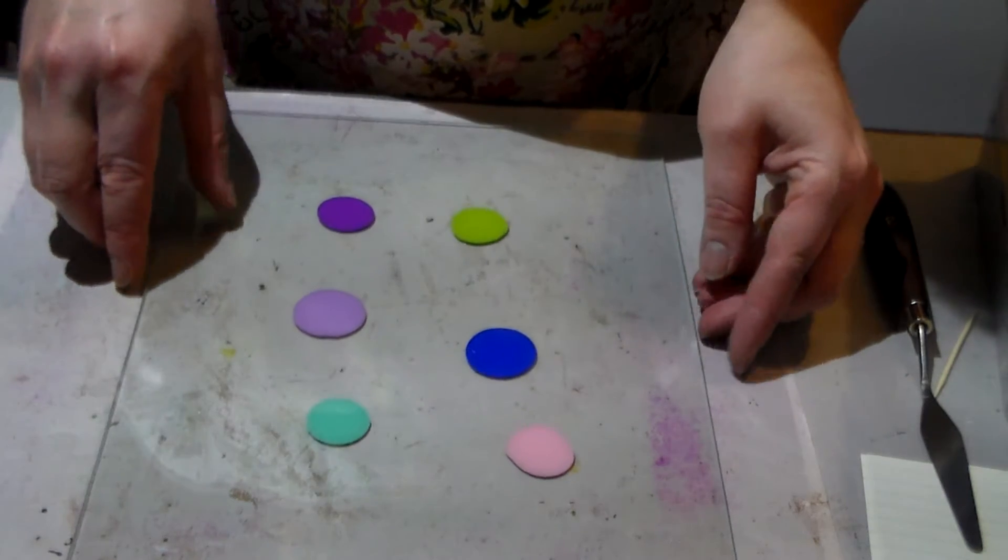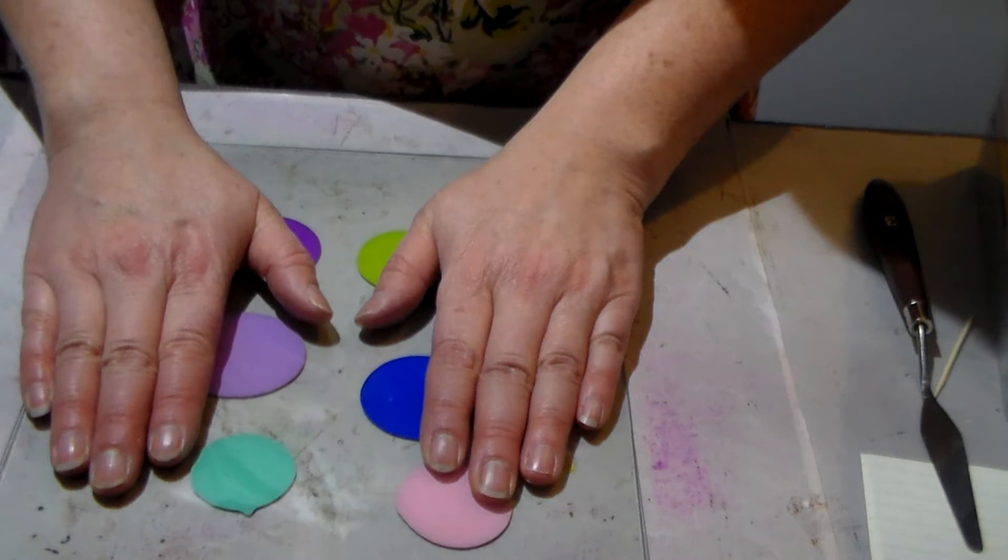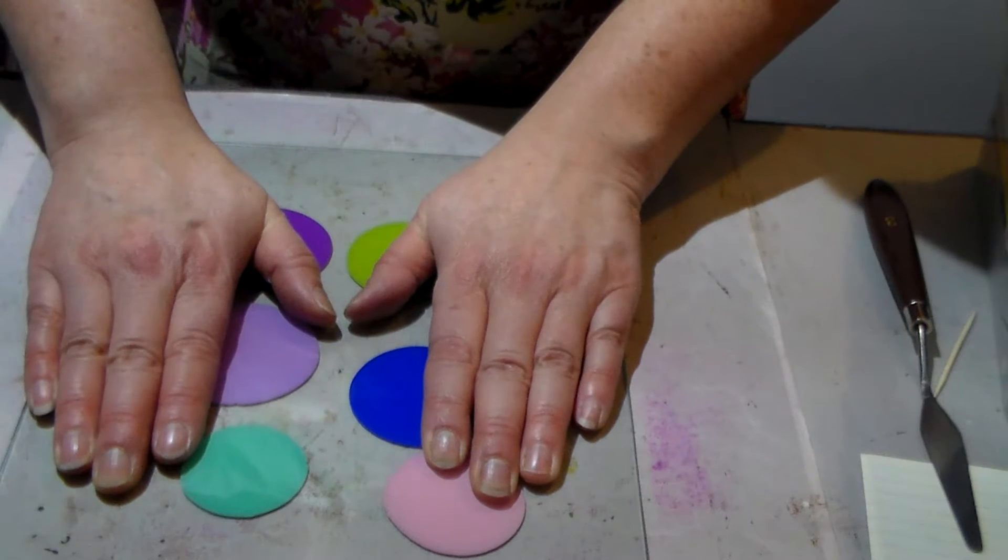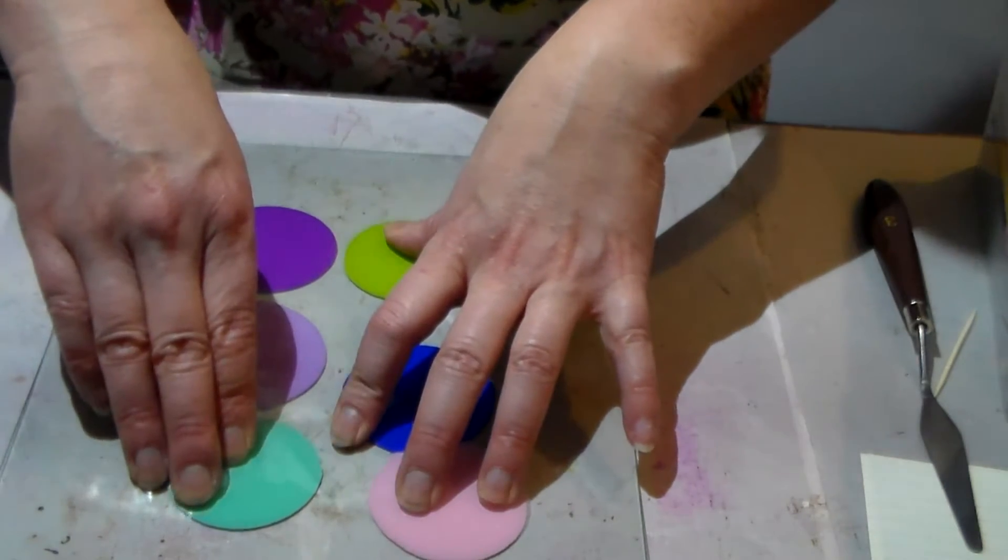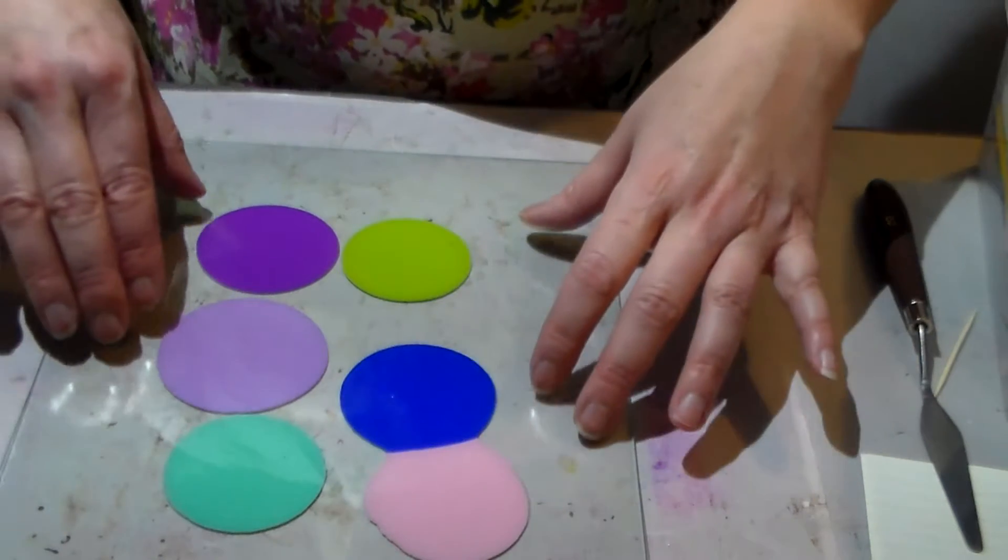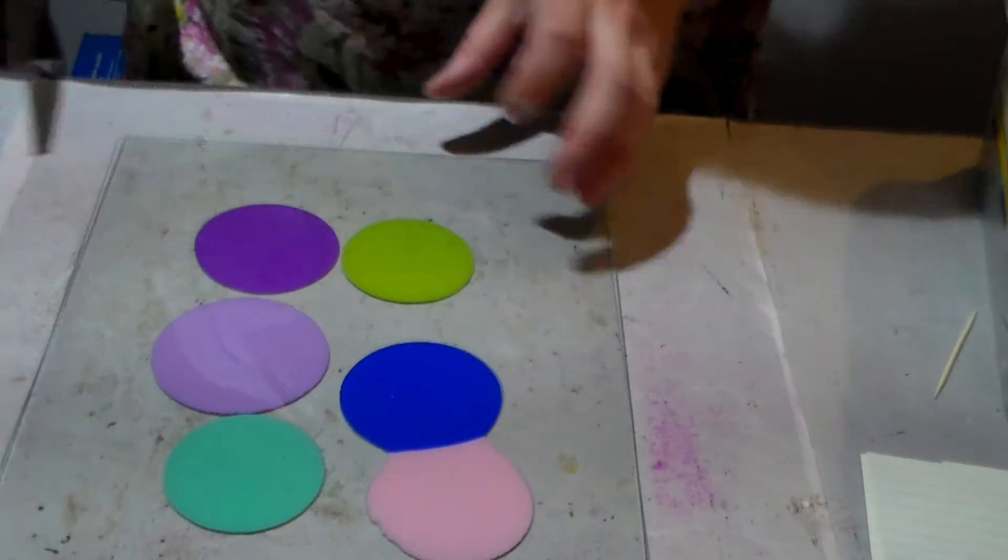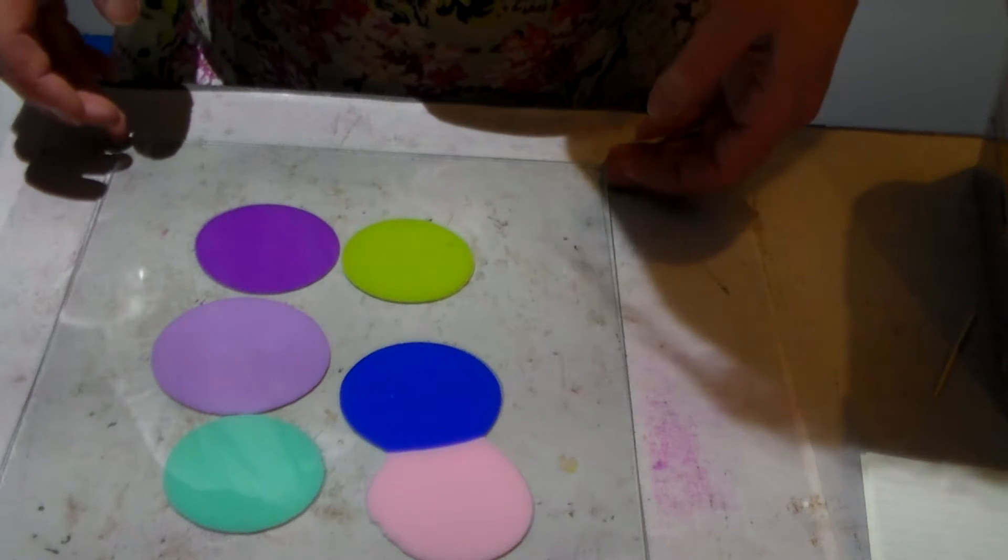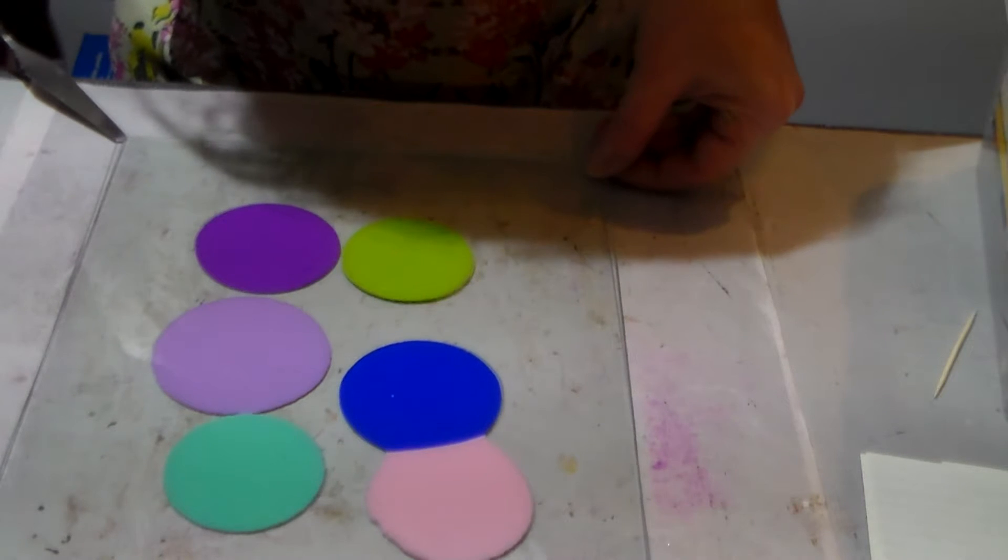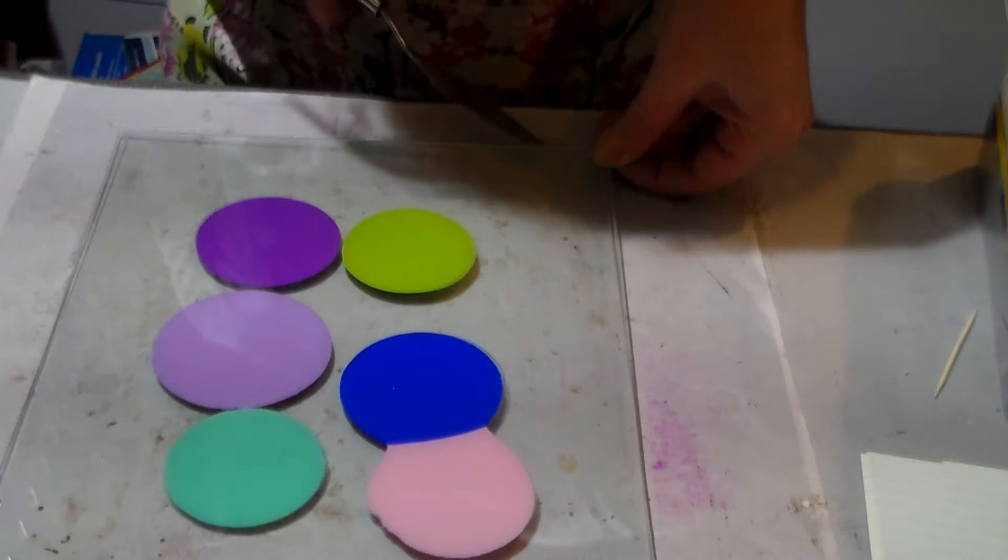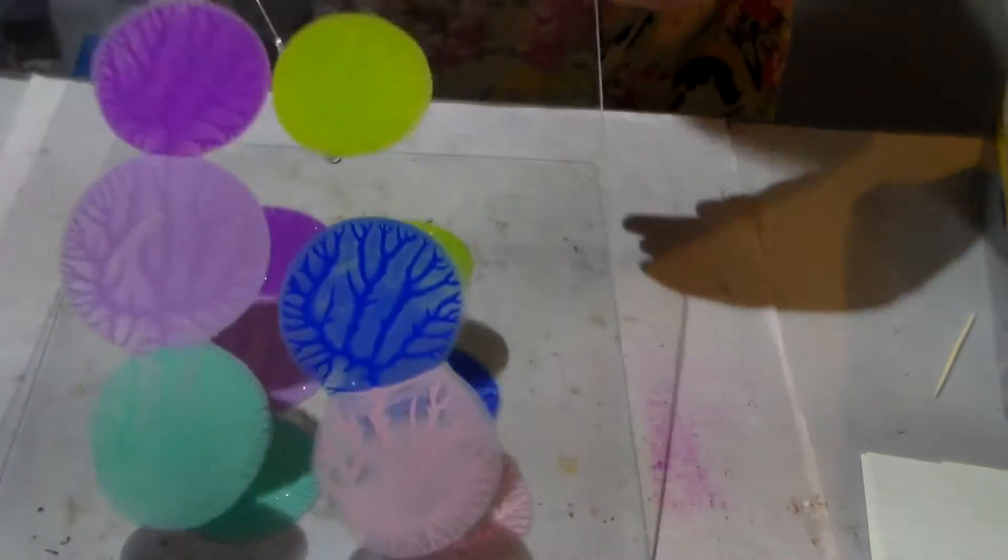This way you get to see my first time at this and hopefully it's not going to be a mess. Basically you just sandwich the paint within the two glasses and then you press it. As you press it the paint expands, so depending on where you put your dab of paint it's going to expand and mix with the other ones. The trick is to lift up the glass and not make it smudge so that you get beautiful trees and stuff. It worked!